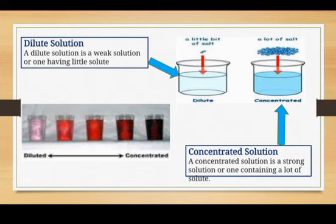We also have two more terms: dilute solution and concentrated solution. A dilute solution is a weak solution having little solute. A concentrated solution is a strong solution containing a lot of solute. From the diagram you can see the difference: a dilute solution is of very light color, but a concentrated solution is of very dark color.